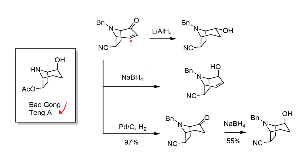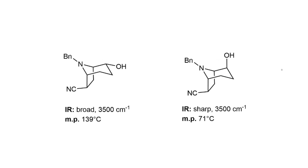Sodium borohydride gave the desired axial alcohol but didn't touch the double bond, so a two-step process was necessary. First, palladium on carbon under one atmosphere of hydrogen reduces the double bond, then sodium borohydride in a second step gives the major product as the axial alcohol, along with a small amount of the equatorial diastereomer separable by chromatography.